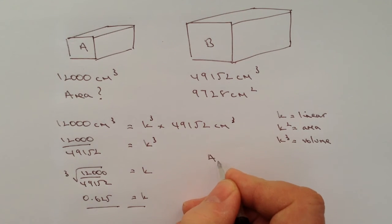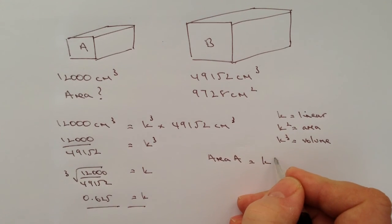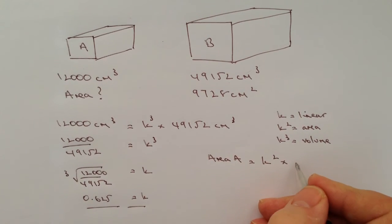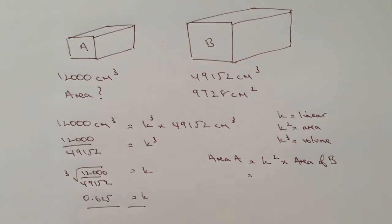So the area of shape A equals K squared times the area of shape B. Okay, and if we pop that into a calculator by filling in the numbers, we've got 0.625 squared (remember that's the value of K and it's squared because it's area) multiplied by 9,728 which is the area of B.